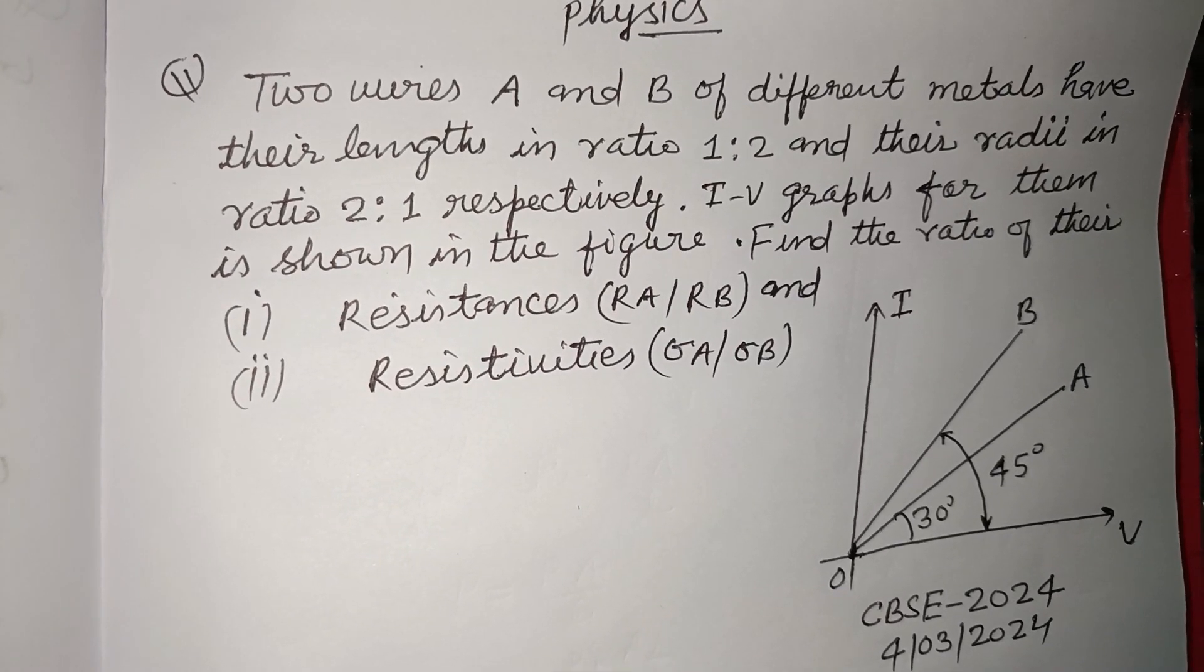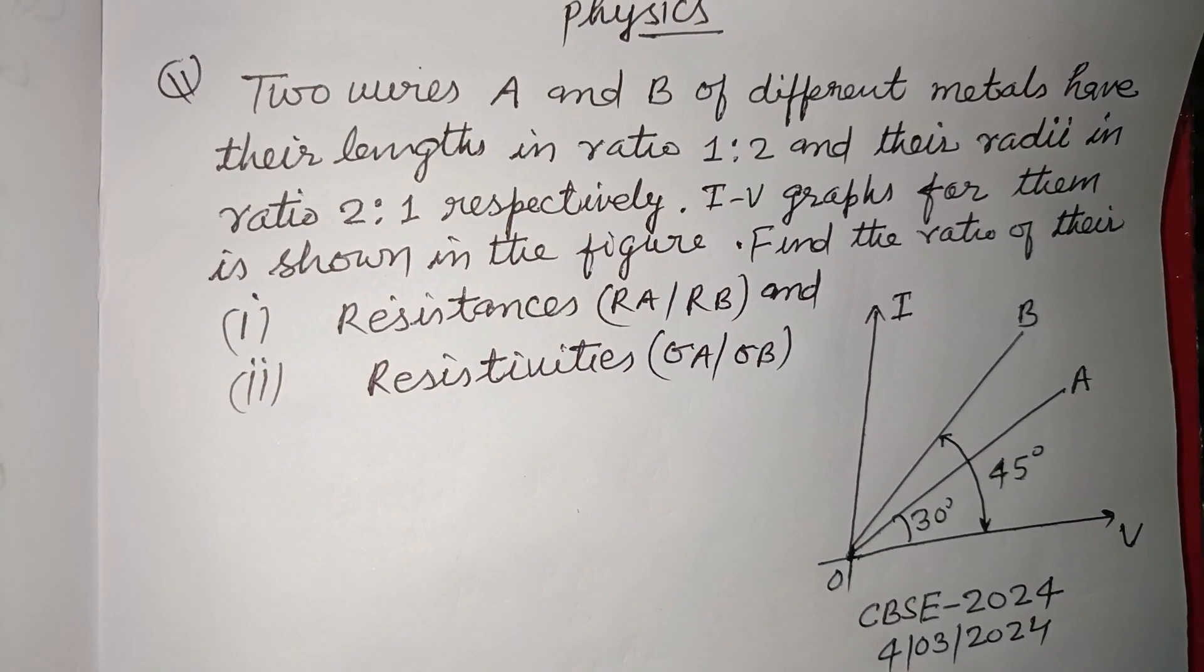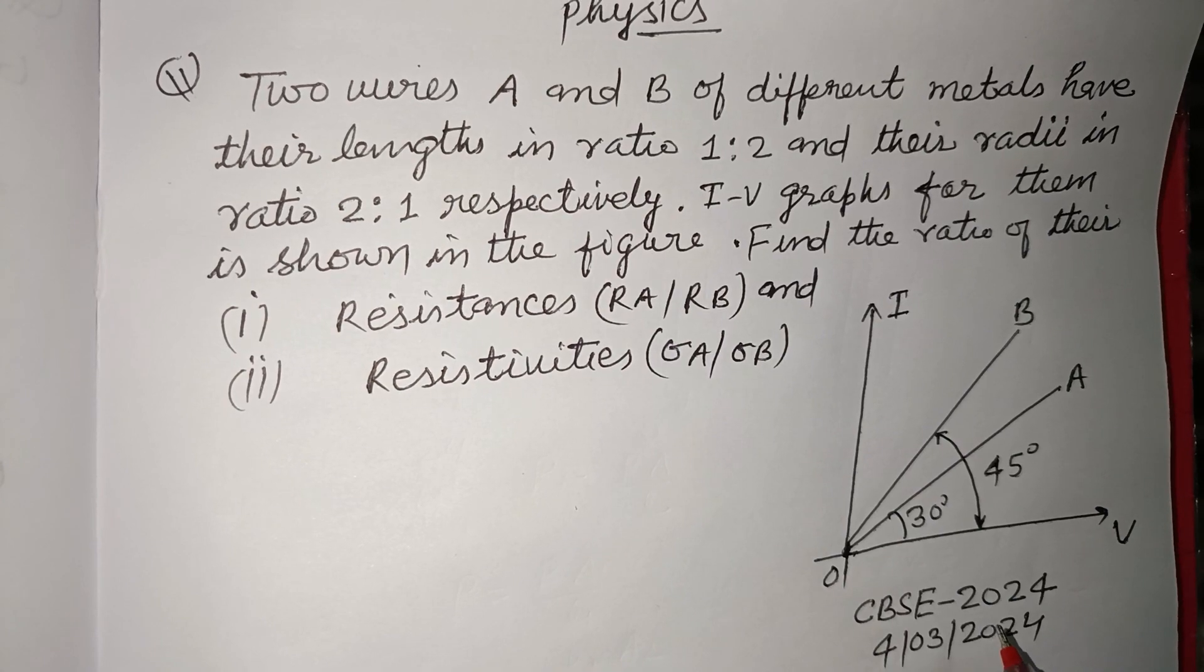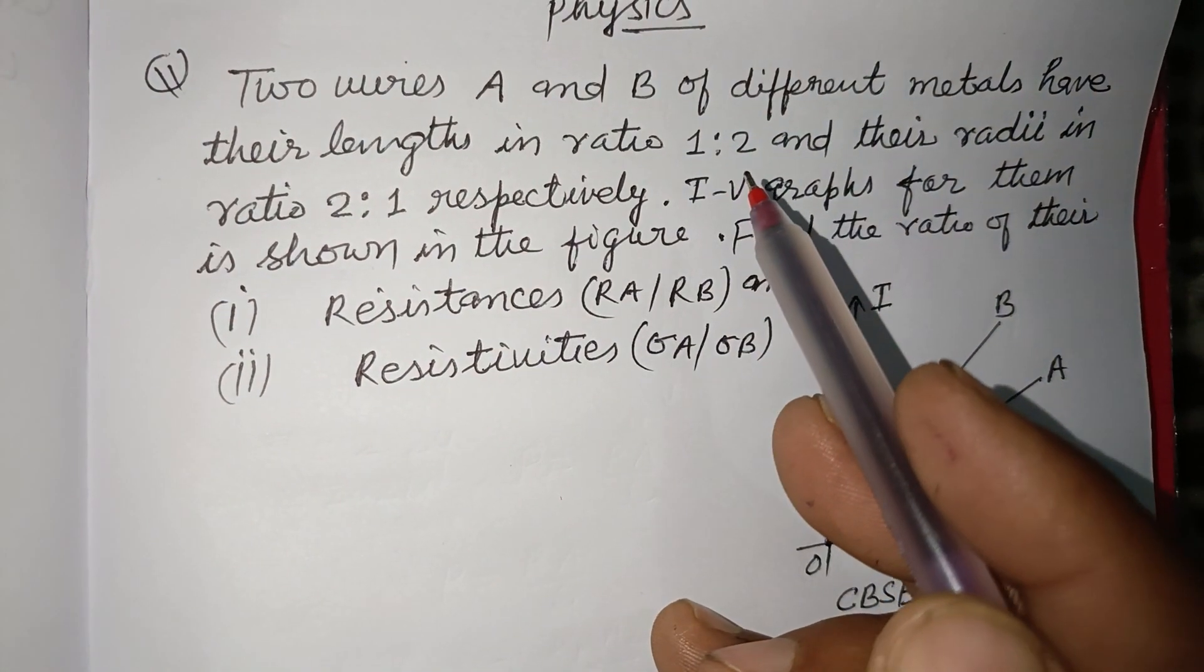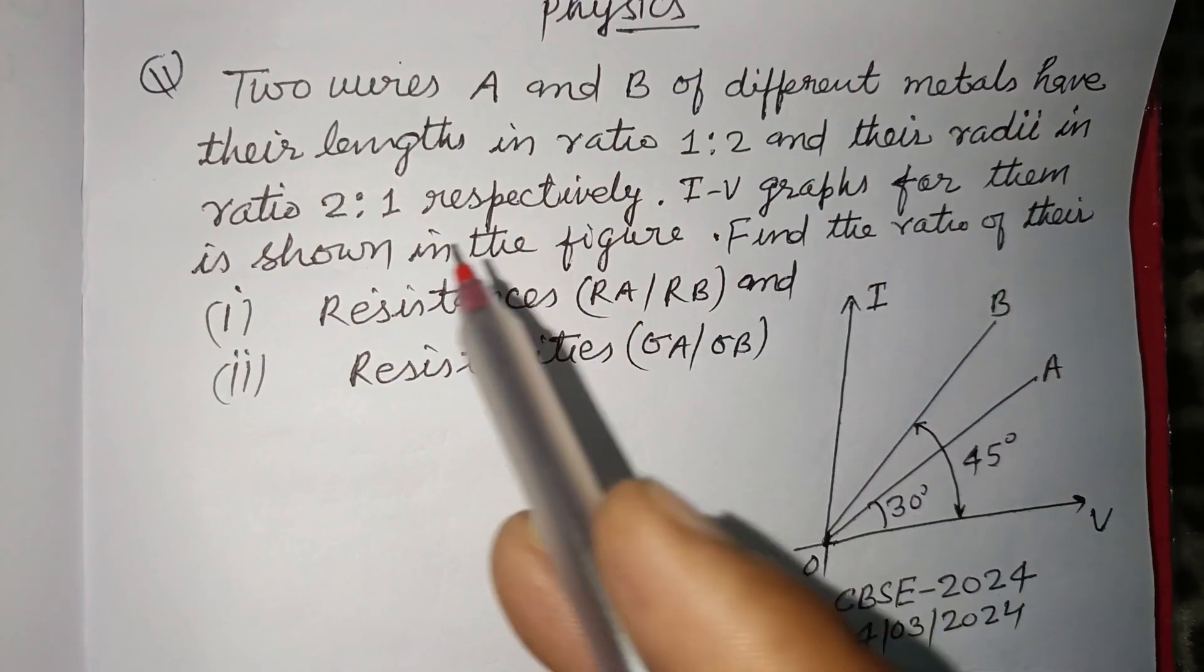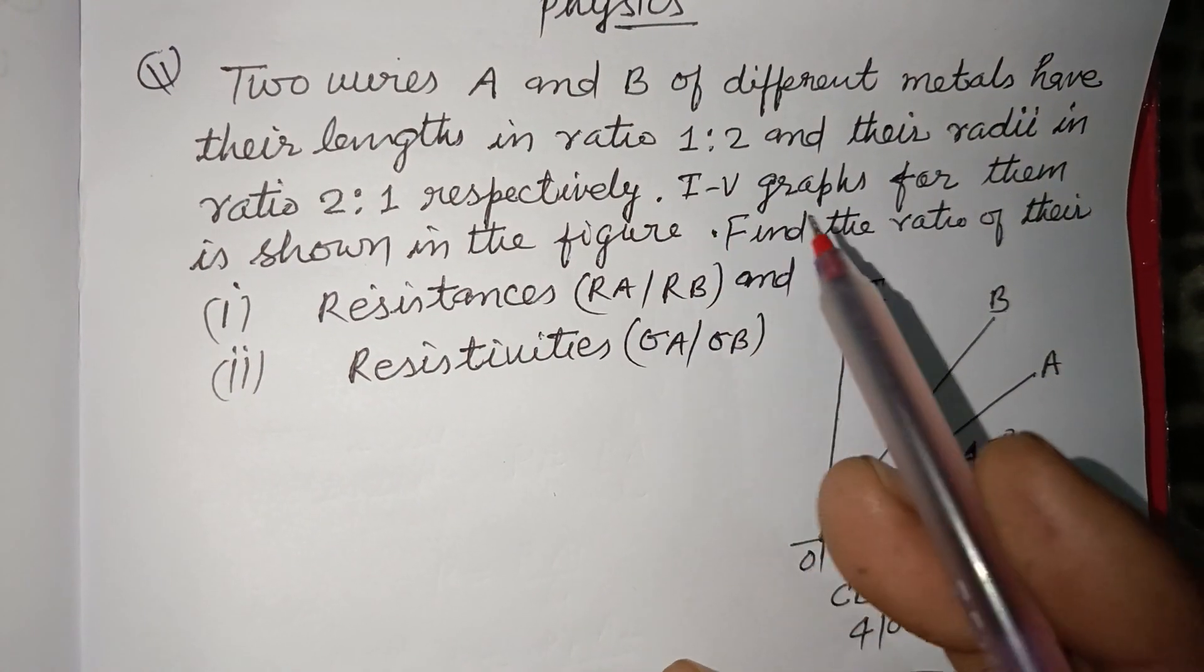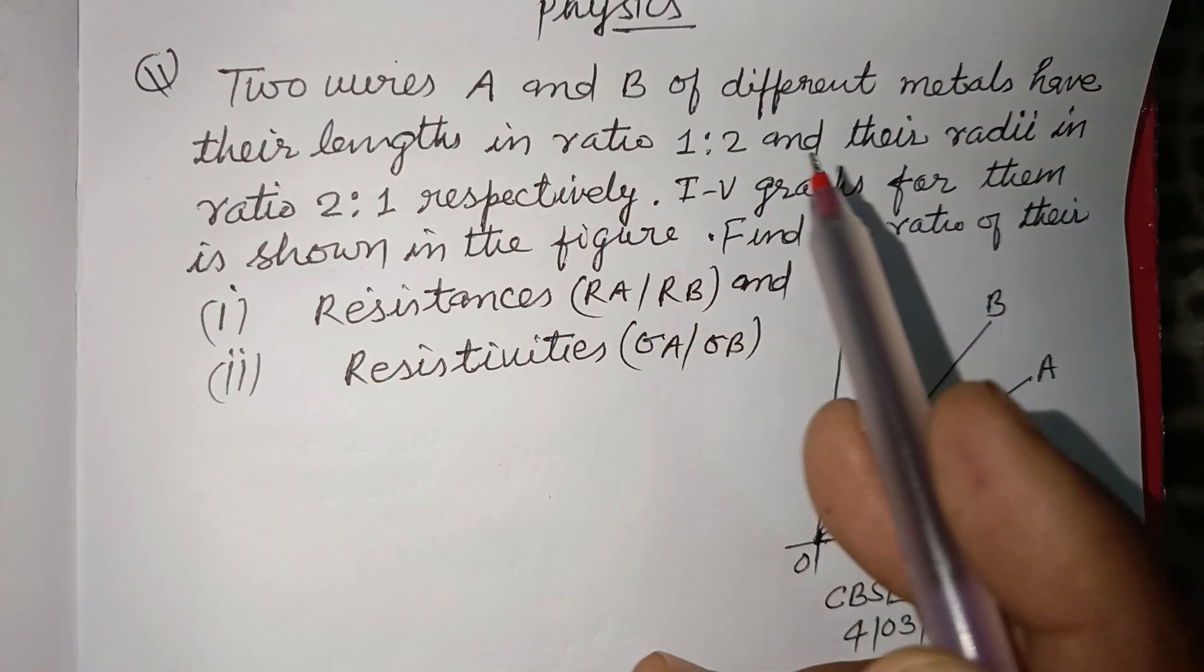Hello viewers, warm welcome to this YouTube channel. This is a question from CBSE board exam 2024 class 12. Two wires A and B of different metals have their length in the ratio 1:2.